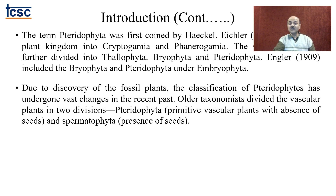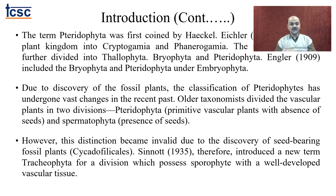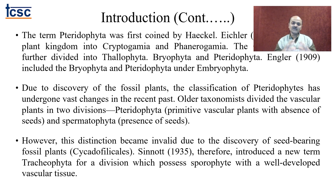However, this distinction became invalid due to the discovery of seed-bearing fossil plants — cycadofilicales. When we talk about cycadophyta, that is a group of gymnosperms, and filicales is one of the orders in pteridophyta. This was a combination of two different groups of plants — pteridophytes and gymnosperms — and such plants were existing on this planet, suggesting a period of amalgamation in evolution. Based upon this, Synet in 1935 introduced a new term tracheophyta for the division possessing a sporophyte with well-developed vascular tissue.